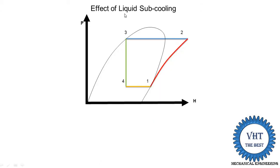We start first with the effect of liquid subcooling. This is the basic pH diagram for the VCRS system. The process from 1 to 2 is the compression process. To find compressor work, it is H2 minus H1. If this distance between H2 and H1 is increased, then work done is increased. If the distance between H2 and H1 is reduced, then work done is reduced.